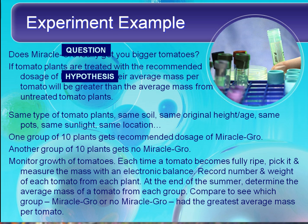When we run our experiment, which is the next step, we have the same type of tomato plants, the same soil, the same original height and age, the same pot, same sunlight, same location. Notice I'm using 'same' a lot — that's very important. These items that we keep the same are called constants.